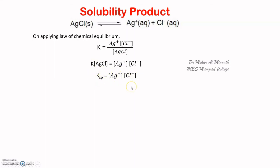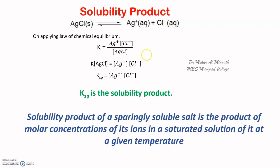Ksp is called the solubility product. The solubility product is the product of the molar concentration of the ions of a sparingly soluble salt in a saturated solution.